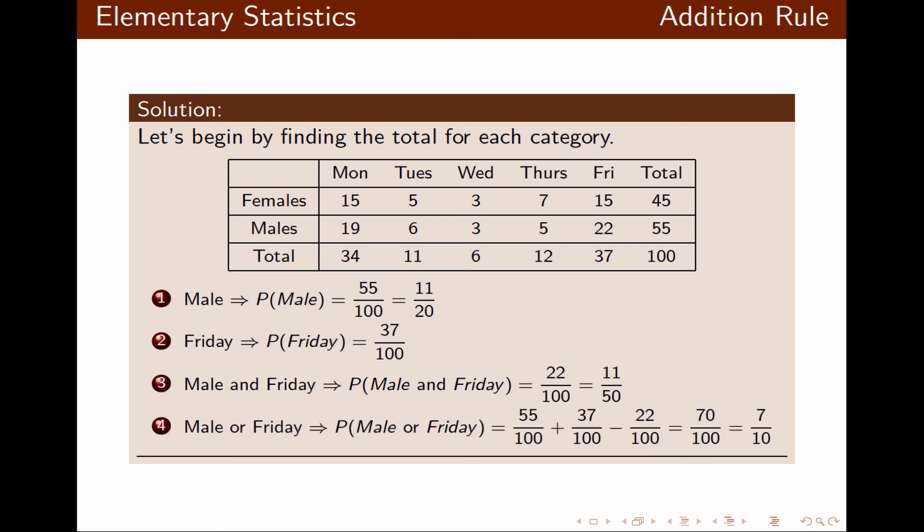Probability that this person was male or missed work on Friday uses the addition rule: probability of male plus probability of Friday minus probability of male and Friday. Once we do the calculation, that probability reduces to 7 over 10. I hope this brief lecture helps you understand the addition rule along with how to use it with Venn Diagram.